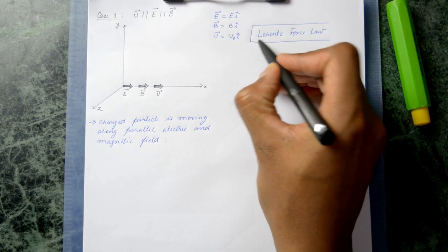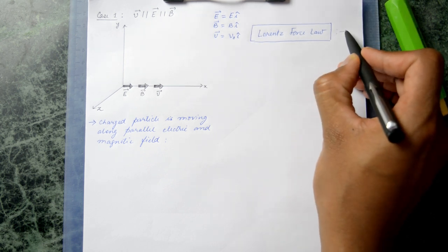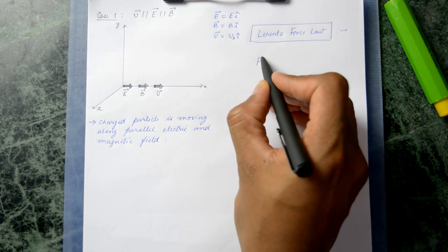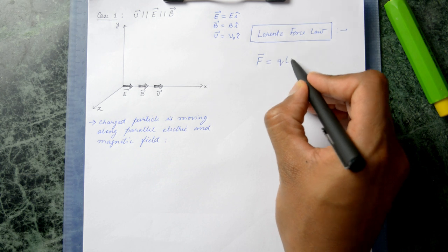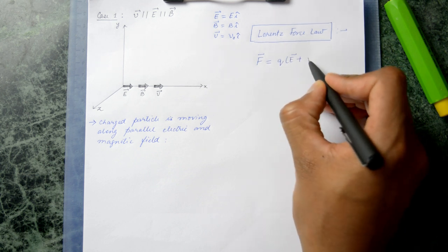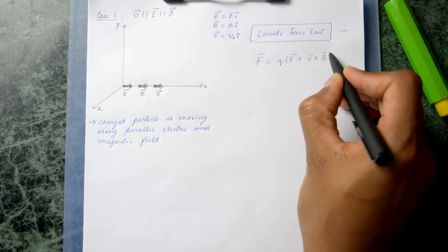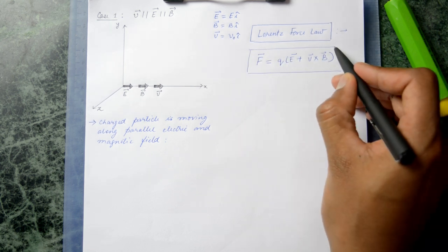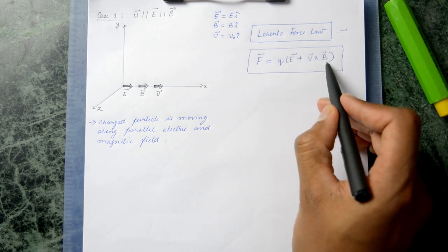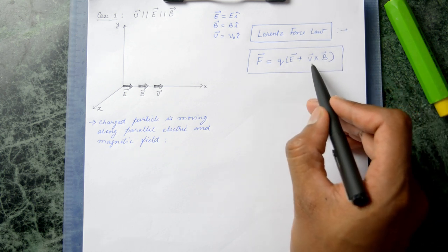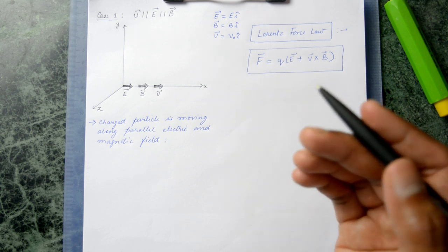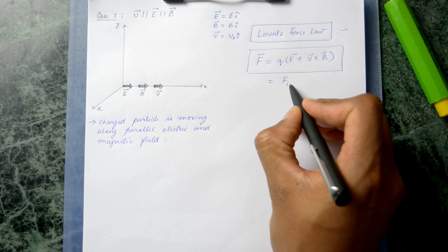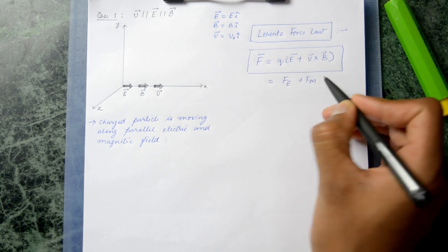The Lorentz force law states that whenever a charged particle is moving in the presence of an external electric and magnetic field, the force experienced is given by F = Q(E + V×B). Here Q represents the charge, E represents the electric field, B represents the magnetic field, and V represents the velocity — all in vector form. This force consists of both an electric force and a magnetic force.